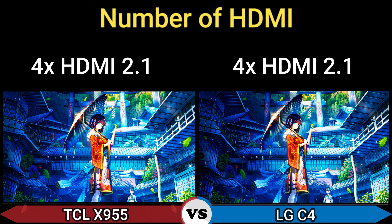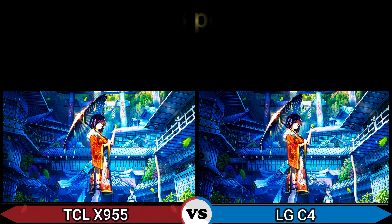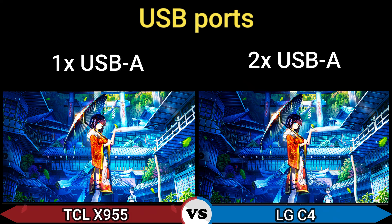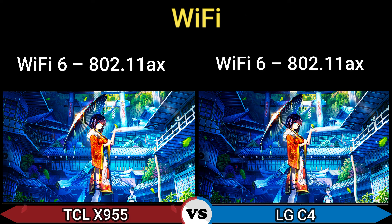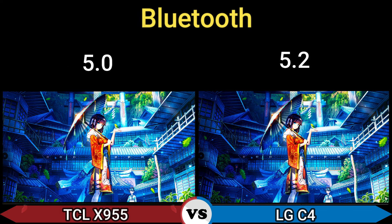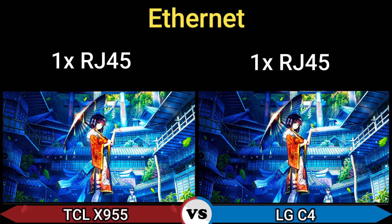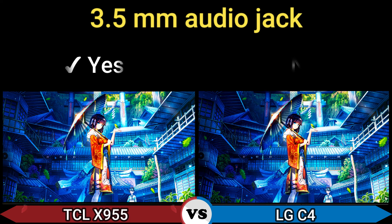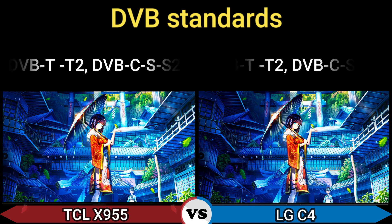Number of HDMI ports: 4. HDMI version: 2.1. USB ports: 1x USB-A and 2x USB-A. Wi-Fi: Wi-Fi 6 (802.11ax). Bluetooth: 5.0 and 5.2. Ethernet: 1x RJ45. 3.5mm audio jack: Yes and No.